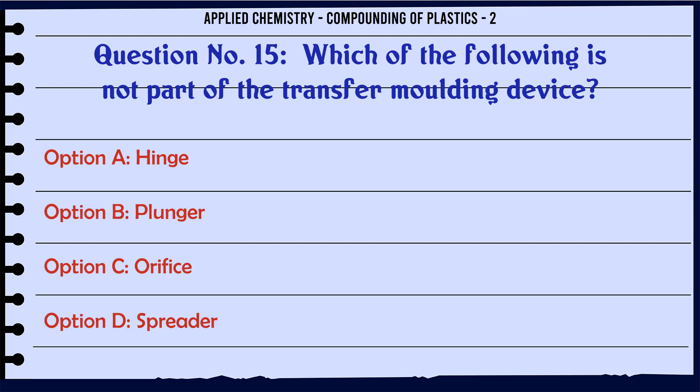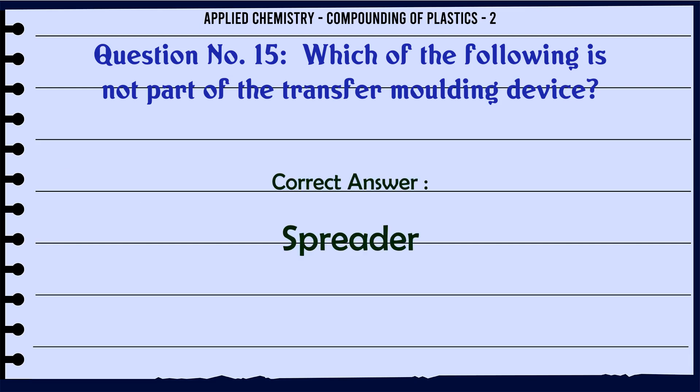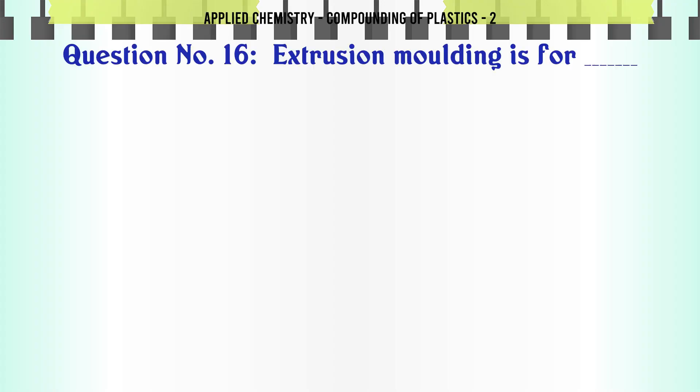Which of the following is not part of the transfer molding device? A. Hinge, B. Plunger, C. Orifice, D. Spreader. The correct answer is Spreader.